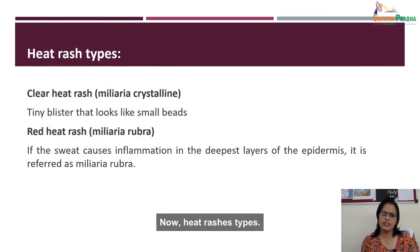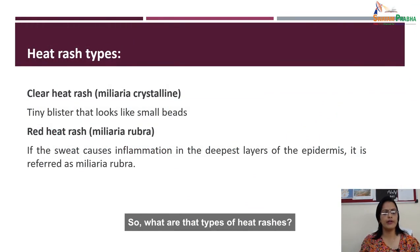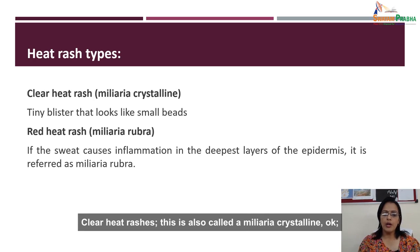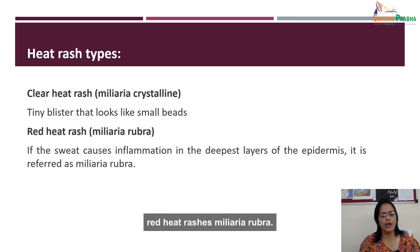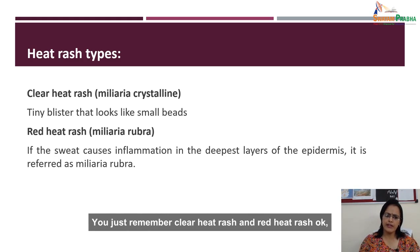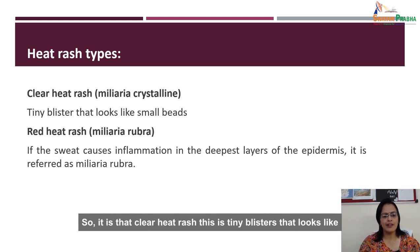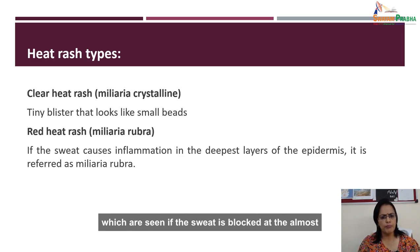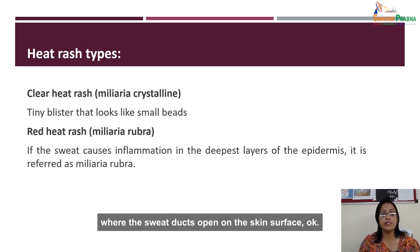Heat rashes have different types. Clear heat rash, also called miliaria crystallina, and red heat rash, miliaria rubra — these are the technical terms. Clear heat rash consists of tiny blisters that look like small bits of sweat on the skin, occurring when sweat is blocked at the superficial layer of the skin where sweat opens on the skin surface. Red heat rash occurs when sweat causes inflammation in the deepest layer of your epidermis, referred to as miliaria rubra.